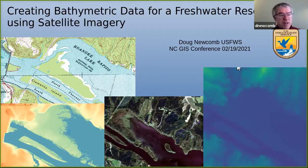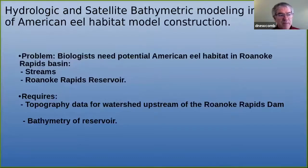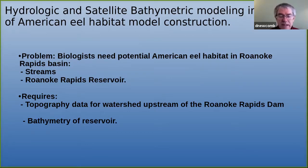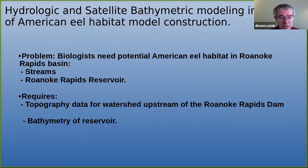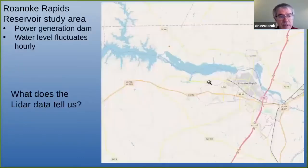The reasoning that we had for doing this bathymetric modeling is that we needed to have some habitat data for American eels in the Roanoke Rapids basin and the reservoir itself. We needed both the streams, we needed the topographic data for the waters upstream of the dam to the next dam, and then the bathymetry of the reservoir as well.